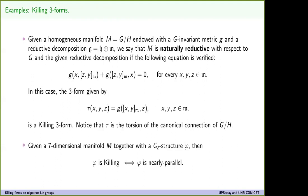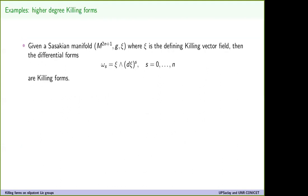If we have a G2 structure on a manifold of dimension seven, then requiring phi to be killing is the same condition as phi being nearly parallel. In higher degree, it is known that Sasakian manifolds possess killing forms of greater degree. In fact, if we have psi, the killing vector field defining the Sasakian structure, then we can take the 2s+1 form omega_s, and these are always killing forms.